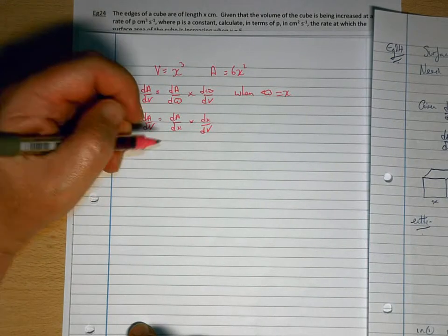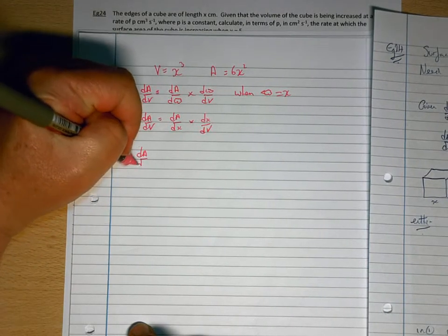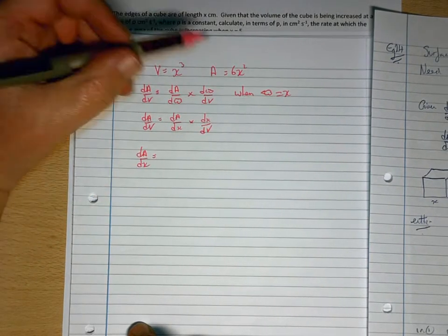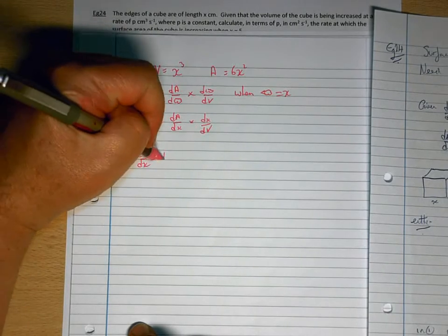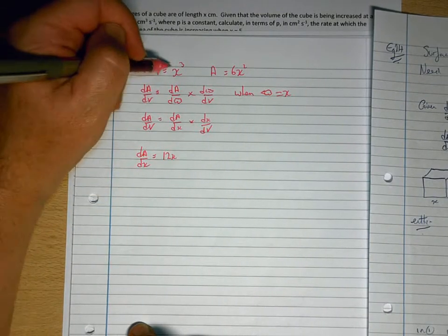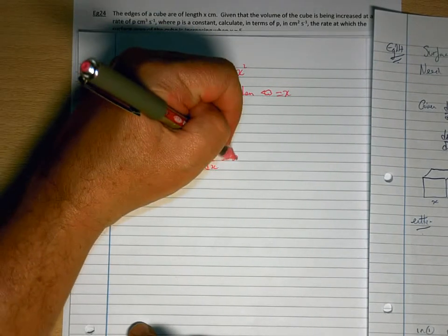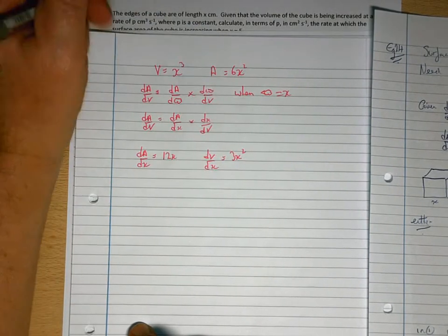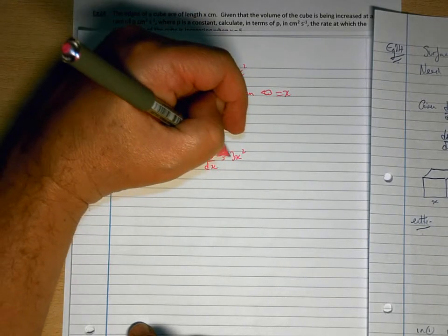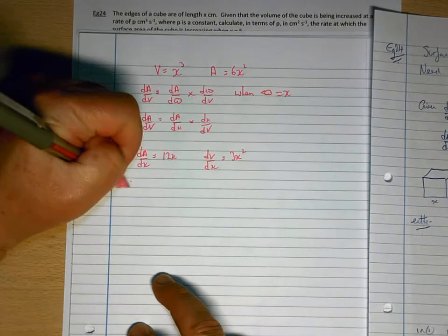So dA/dx is going to be 12x. dV/dx would be 3x squared. So dx/dV would be 1 over 3x squared. So therefore,